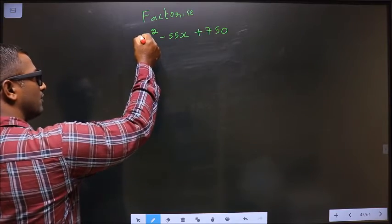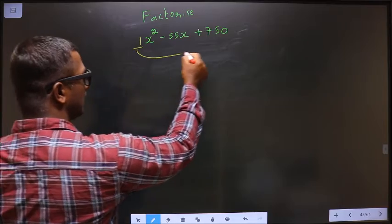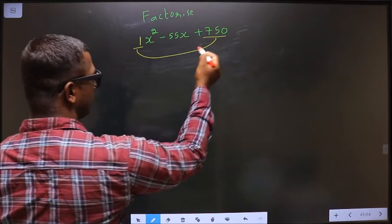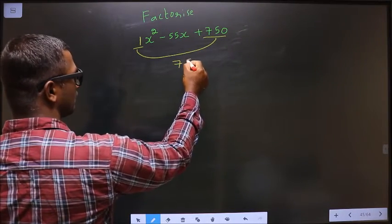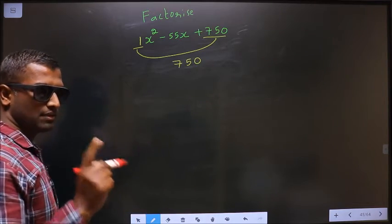Whatever is the x² coefficient, here it is 1, you should multiply it with the constant, that is 750. So 1 × 750 = 750. That is your step 1.